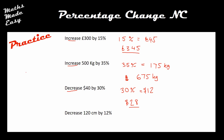For the final practice question I'll write out the key percentages I need. 10% is 12 centimetres and 1% is 1.2 centimetres. To make 12% I need one lot of 10% and two lots of 1%, giving 14.4 centimetres. The question asks for a decrease, so I subtract that from 120, giving a final answer of 105.6 centimetres.